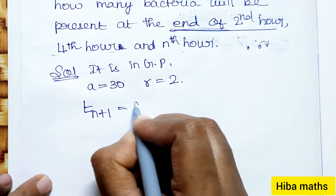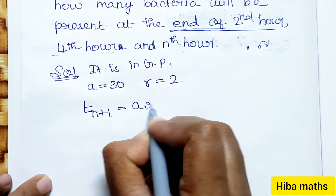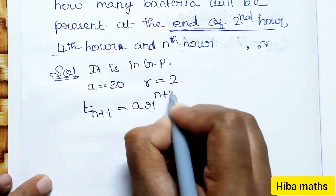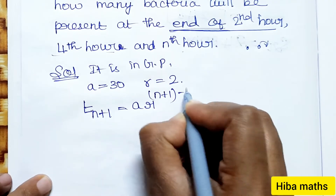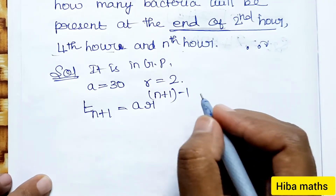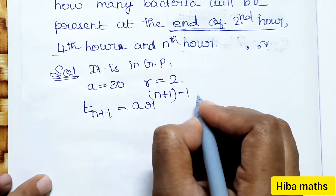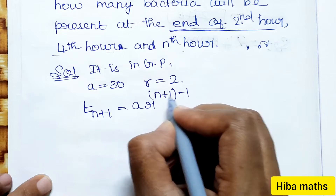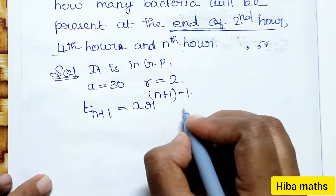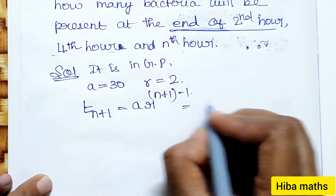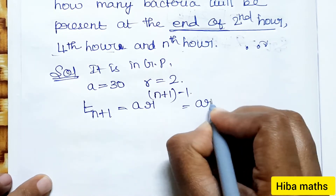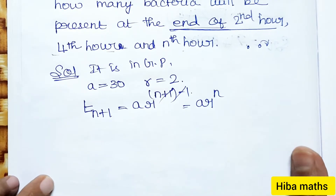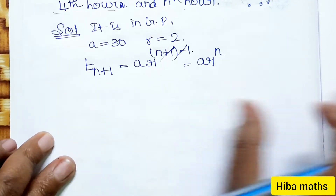The general term formula is T(n+1) = a · r^n. Simplifying, T(n+1) = a · r^n, where the exponent n+1 minus 1 simplifies to n.